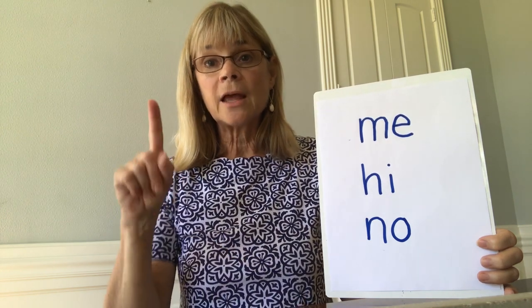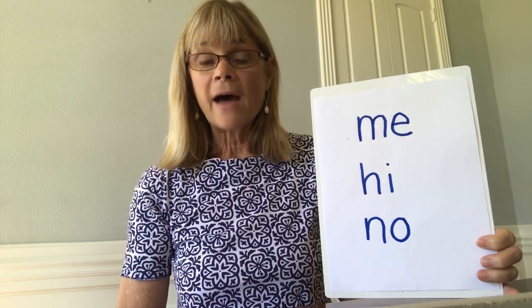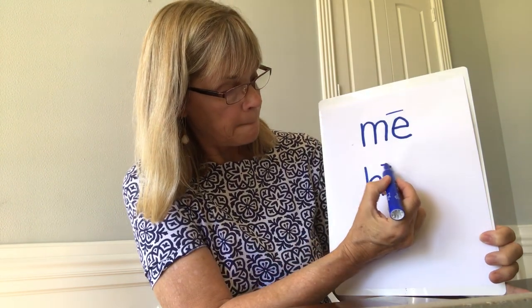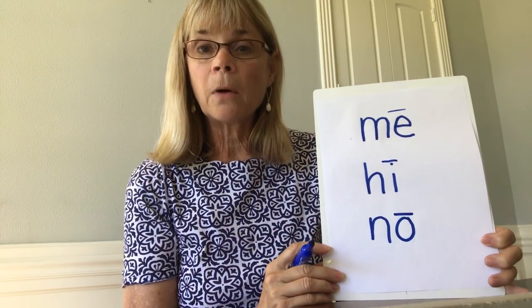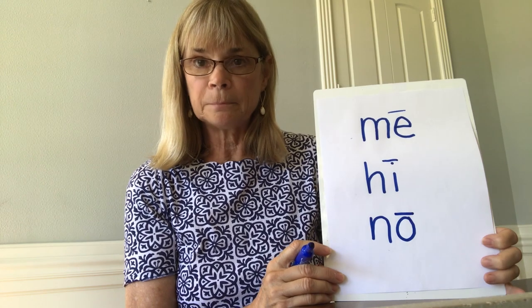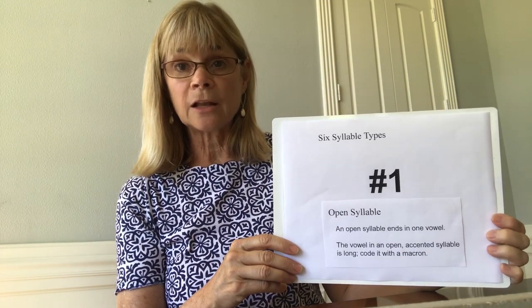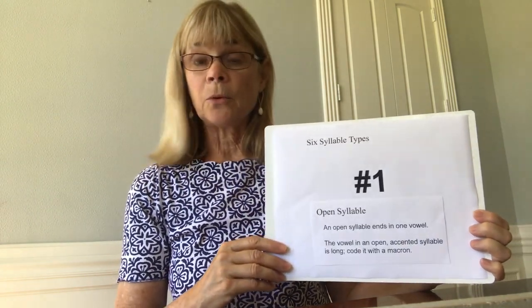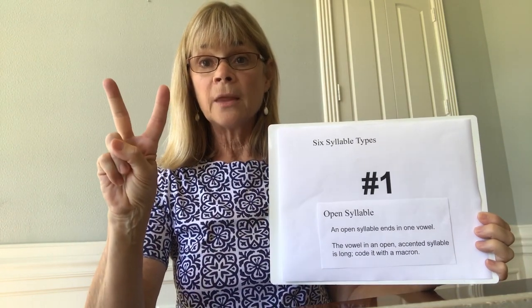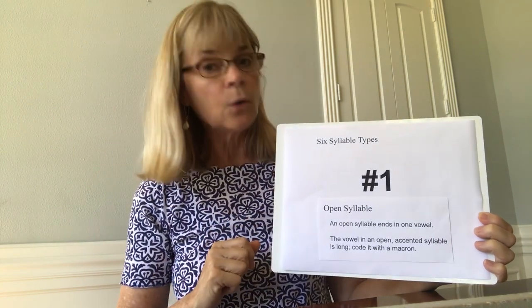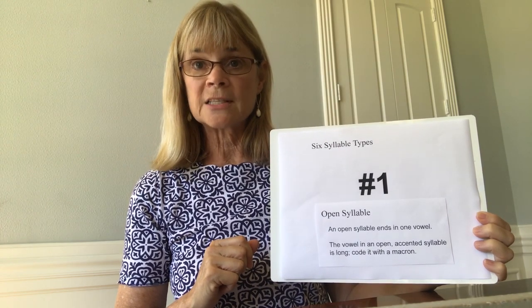An open syllable ends in one vowel. The vowel in an open syllable is long, and if we were to code that vowel, we could code it with a code mark that's called a macron. We discovered the very first syllable type. The syllable type is called an open syllable. An open syllable ends in one vowel. The vowel in an open syllable is long and we code it with a macron. Long vowels say their names.